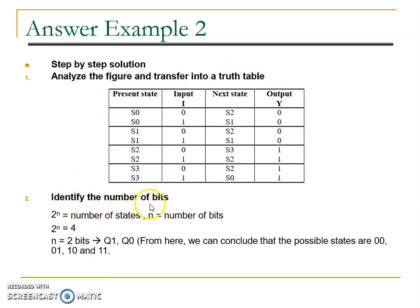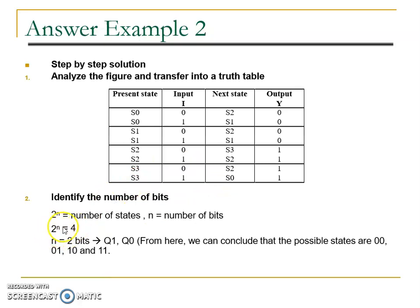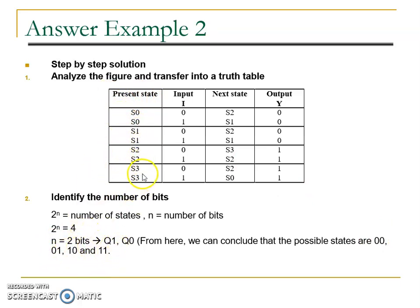To complete this table, we can identify the number of bits. Since 2 to the power of N equals the number of states, and the number of states is 4, N equals 2 bits. We write these as Q1 and Q0. The possible states are: 0,0 for S0; 0,1 for S1; 1,0 for S2; and 1,1 for S3.